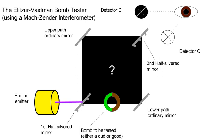Since their publication, real-world experiments have confirmed that their theoretical method works as predicted. The bomb tester takes advantage of two characteristics of elementary particles, such as photons or electrons: non-locality and wave-particle duality. By placing the particle in a quantum superposition, the experiment can verify that the bomb works without ever triggering its detonation, although there is a 50% chance that the bomb will explode in the effort.